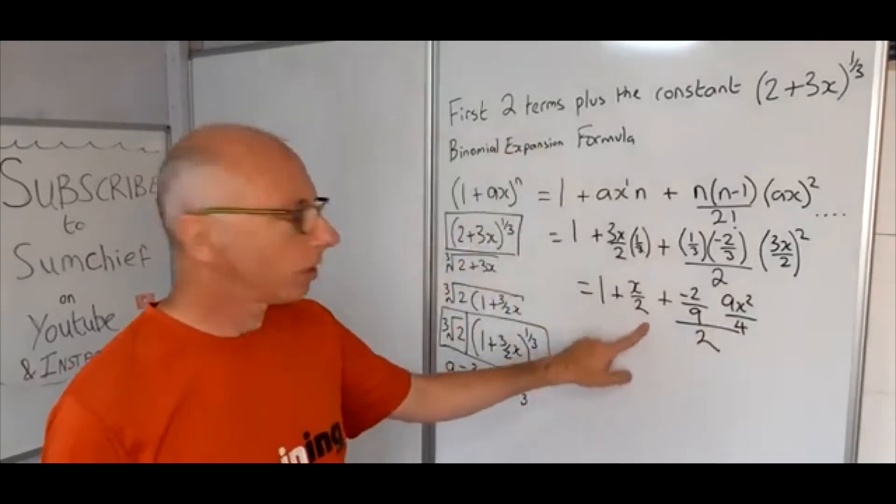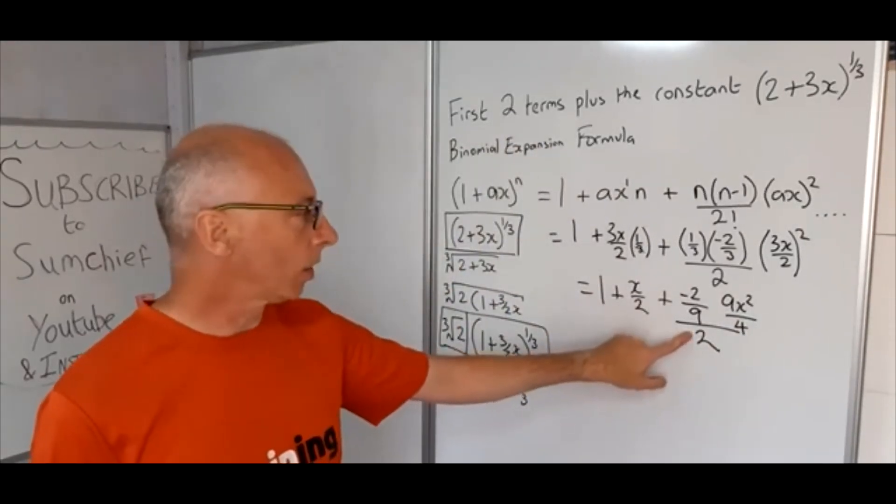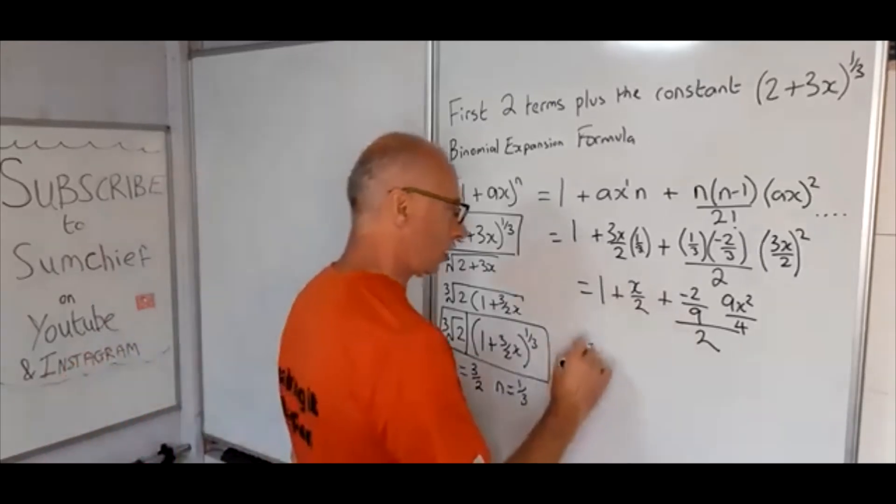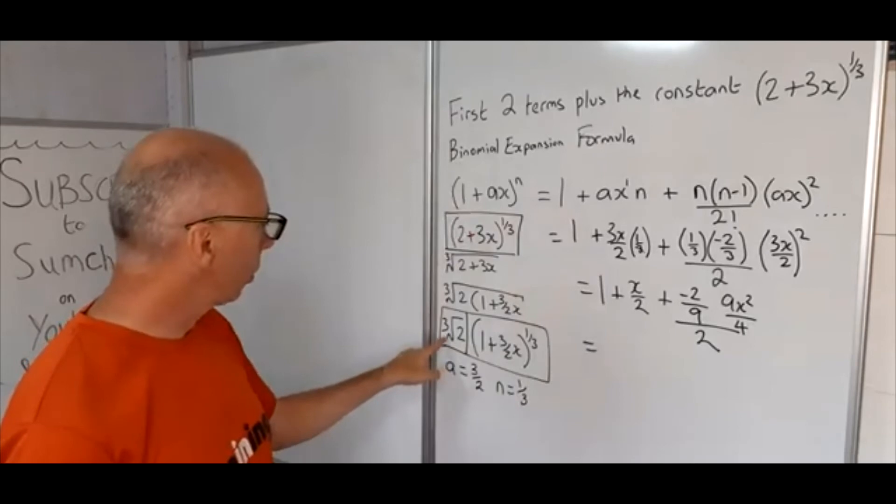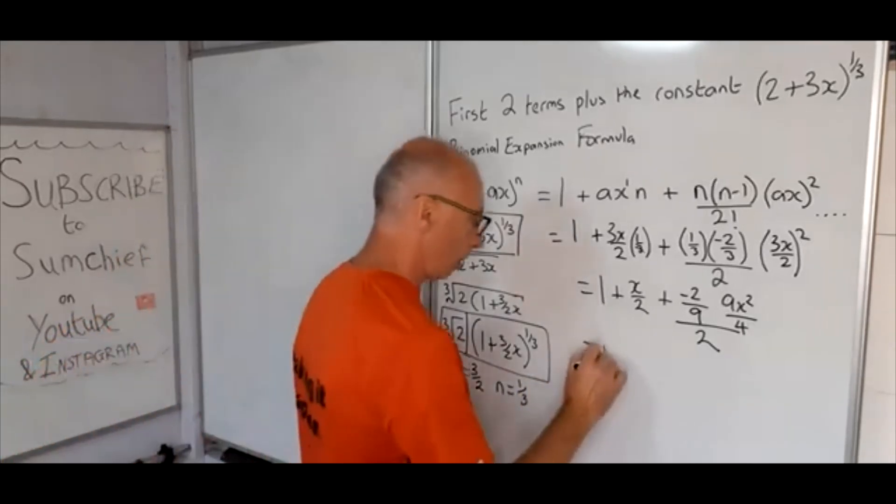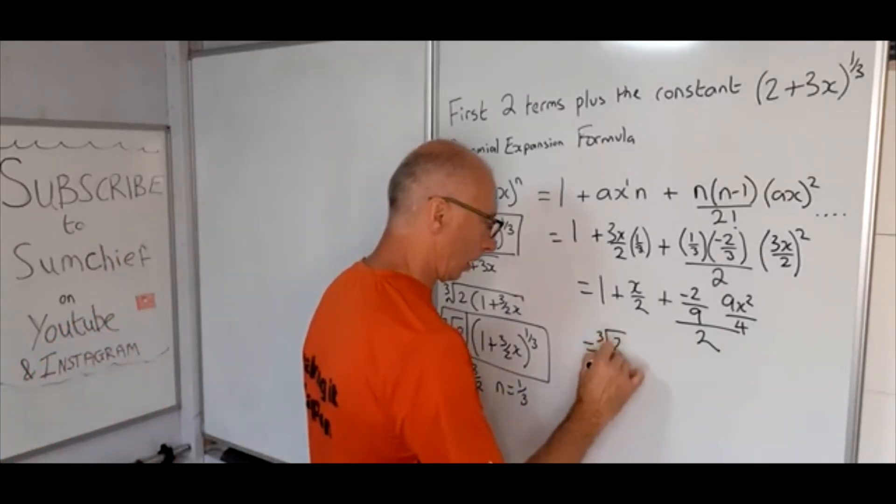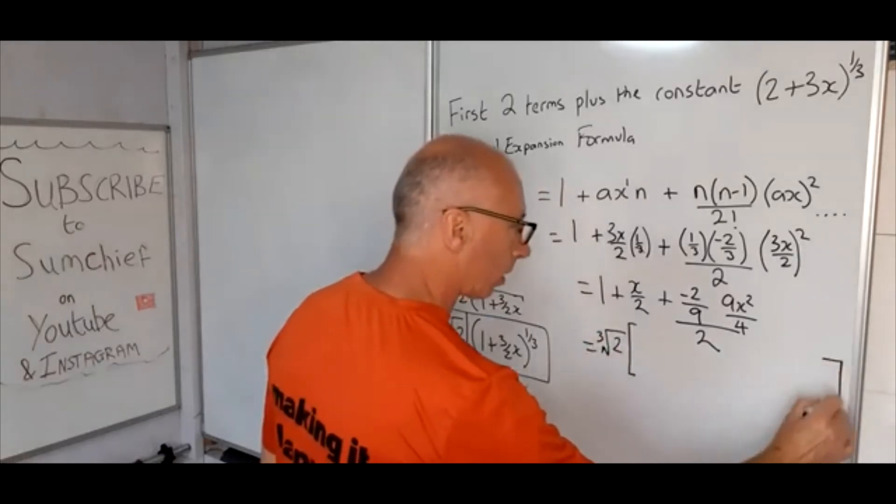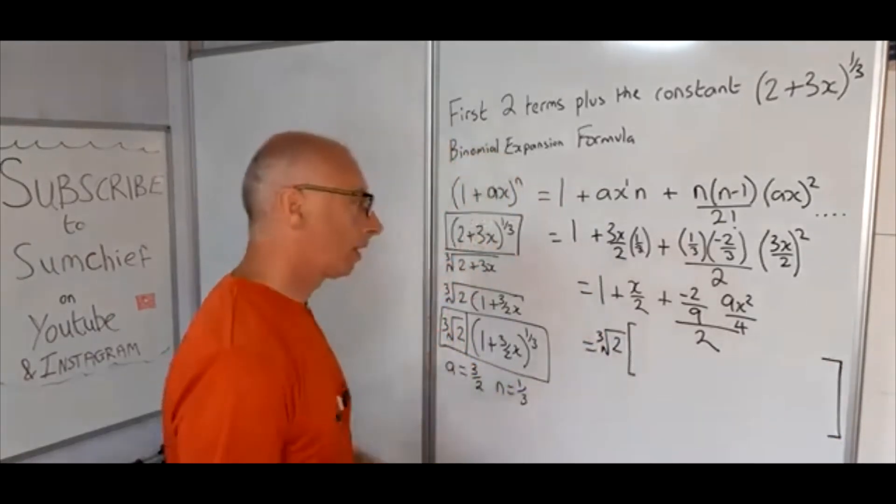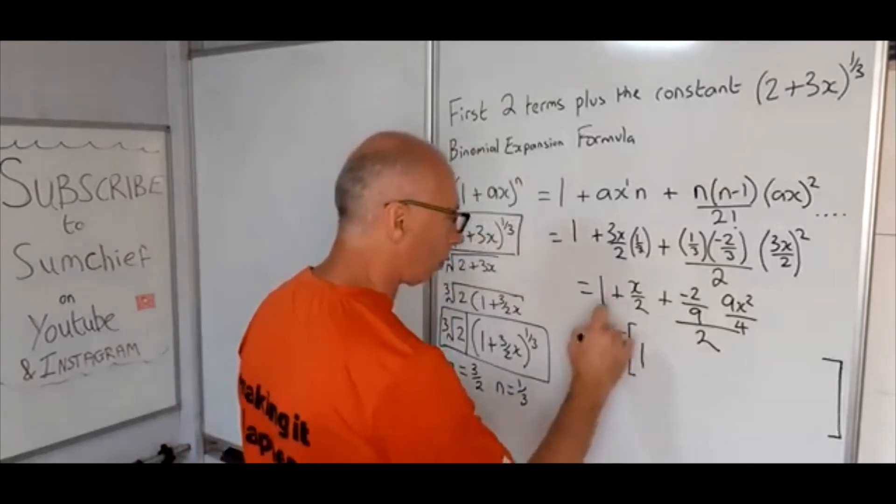Right, first two terms is fine. This is looking a little bit messy so let's just simplify that up. We can put the cube root of 2 in front of it. Now I think we're ready to put that in there and get all these terms inside here. So 1 plus x/2.